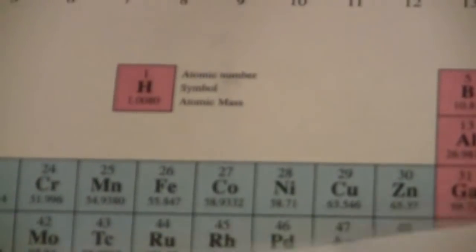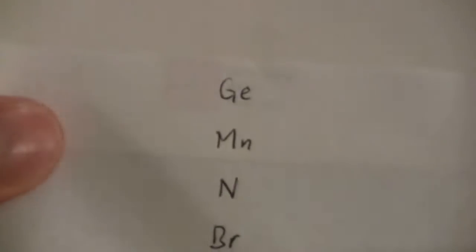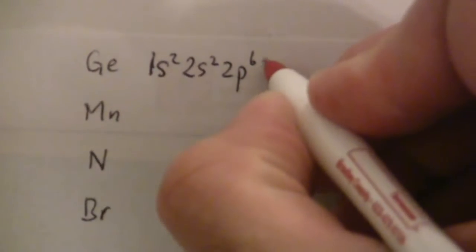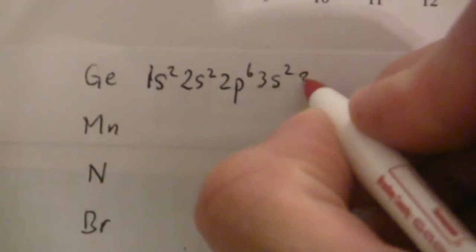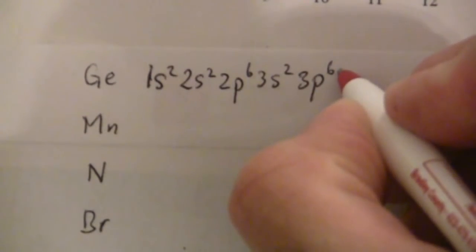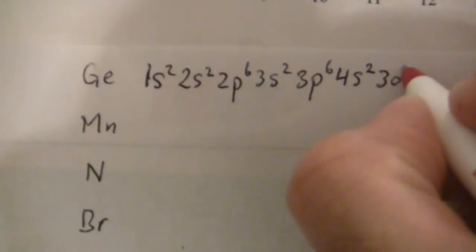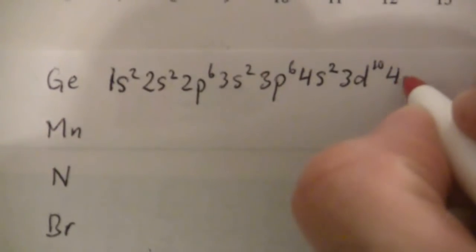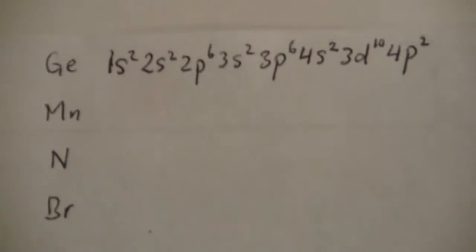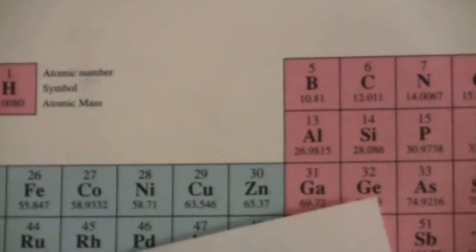So we can just follow that sequence and we'll have, let's see if I can do this. Next, we have for germanium, 1s2, 2s2, 2p6, 3s2, 3p6, then we go 4s2, 3d10 and then back up to 4p2. So that gets us up to germanium.